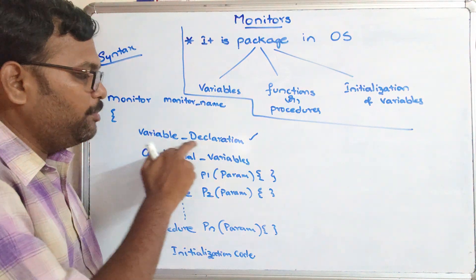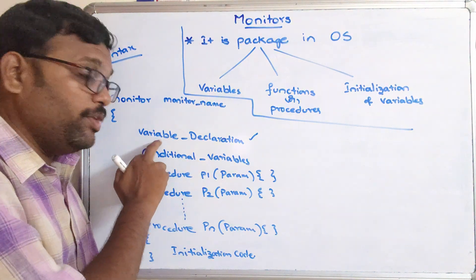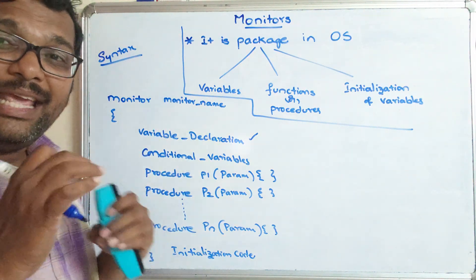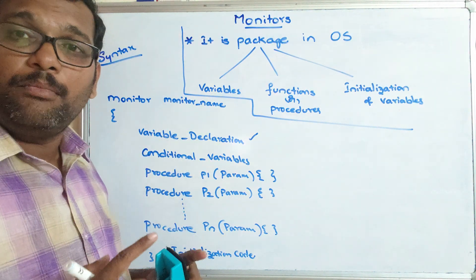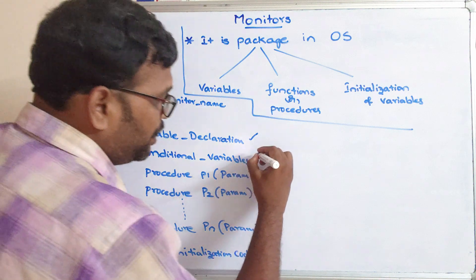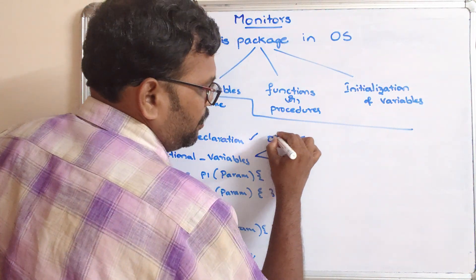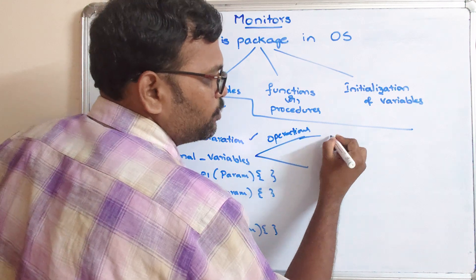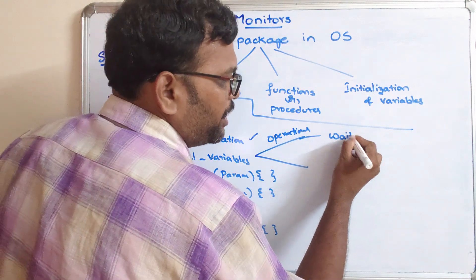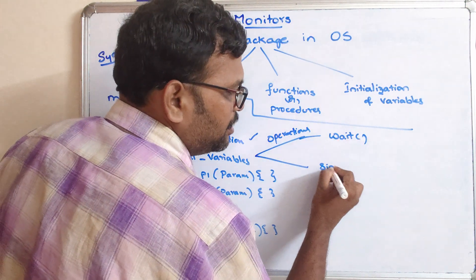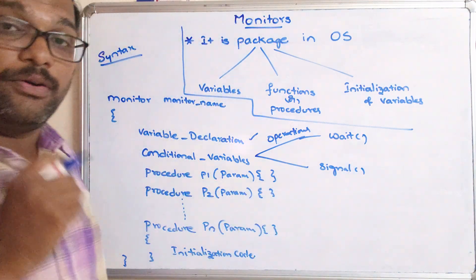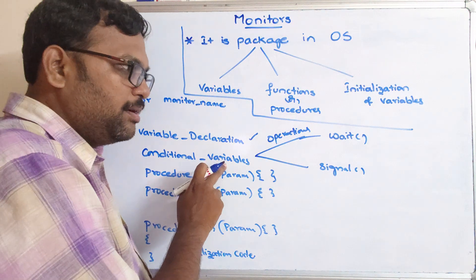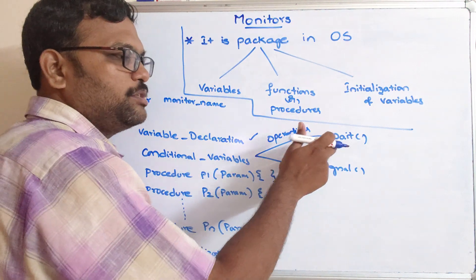The initialization code is where variables are initialized with values. As for conditional variables, any conditional variable inside the monitor can perform two operations: the wait operation and the signal operation — which we have also used in semaphores. Here too, conditional variables use wait and signal.